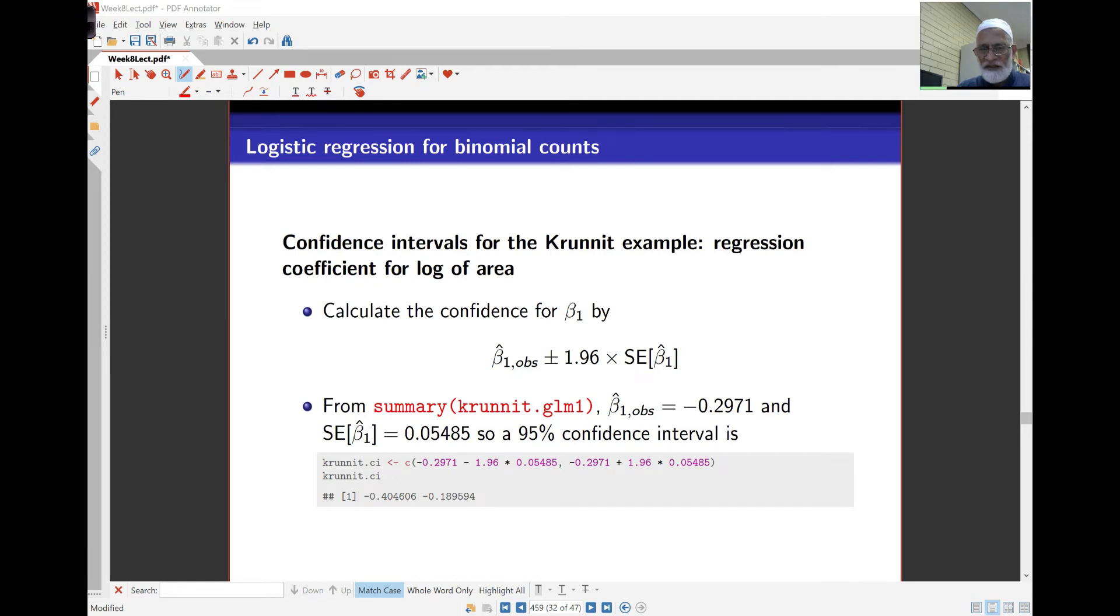For the confidence interval for beta 1, it's simple, exactly as always. It's going to be the observed value of beta 1 from the model itself, and then times some z value. In this case it's 95%, so it's 1.96, and then the standard error of beta 1 that comes from the model output as well. So in this case, from the output, beta 1 is negative 0.2971.